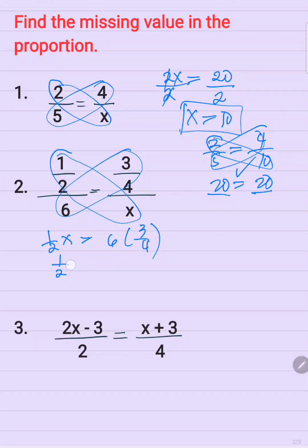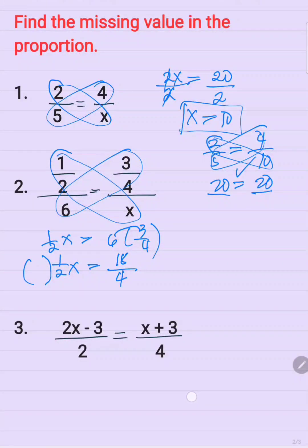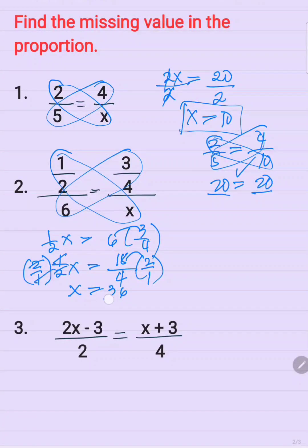So copy first 1 half x, and then you can perform this: 6 times 3 is equal to 18 divided by 4. Now, this is a fraction as the numerical coefficient of x. So to get rid of this, you can multiply 1 half by its reciprocal, 2 over 1. Also multiply on the other side by 2 over 1. So x is equal to 18 times 2 is equal to 36 divided by 4, which is equal to 9. So x is equal to 9.